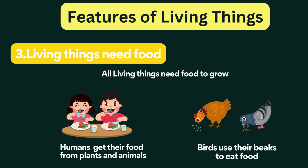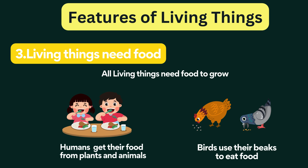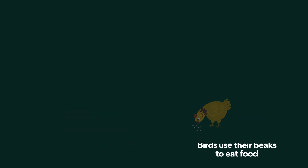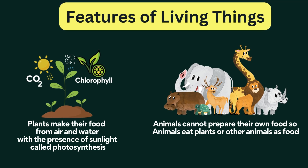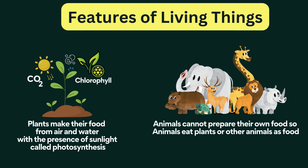Living things need food. All living things need food and water to live. Food gives energy to carry out different life activities. Humans get their food from plants and animals. Birds use their beaks to eat food. Plants make their food from air and water with the presence of sunlight, a process called photosynthesis. Animals cannot prepare their own food; they eat plants or other animals as food.